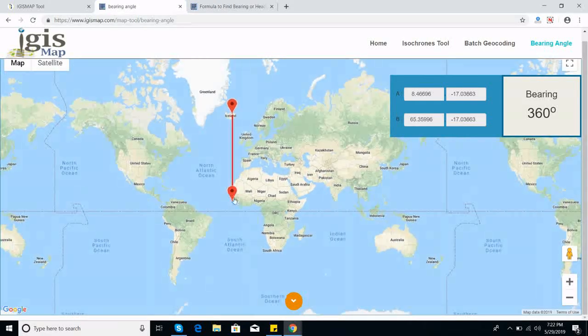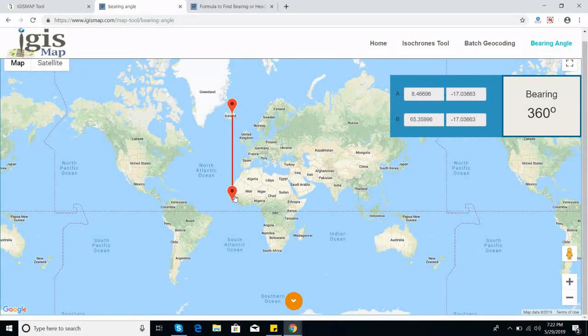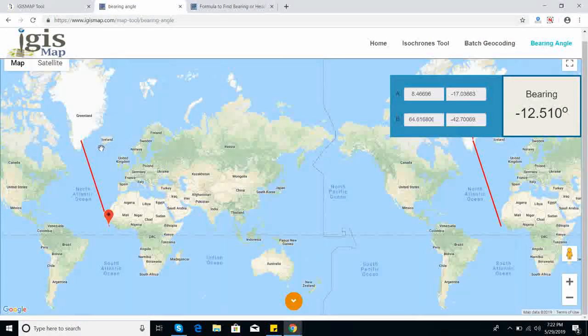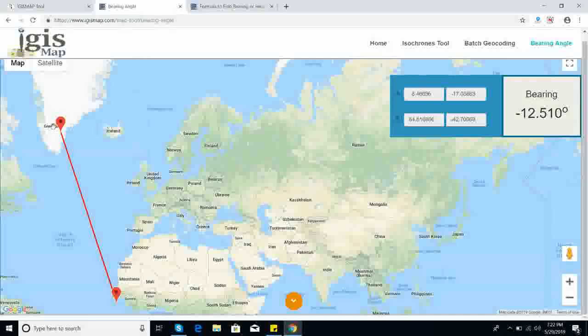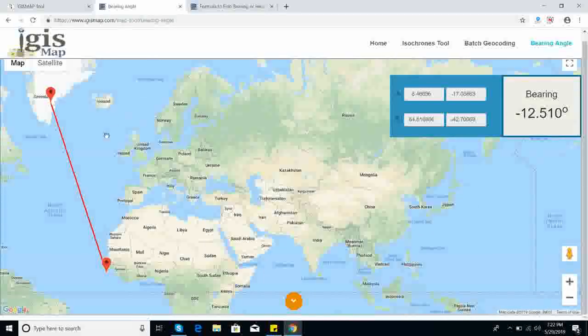If you want to, you can go to this tool by this link: www.igsmap.com/map-tool/bearing-angle. A link is provided in the description. Now if I want to move this, then this is the bearing angle between these two points.